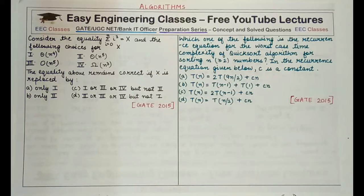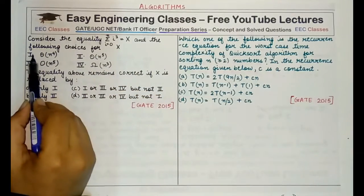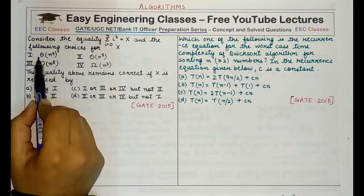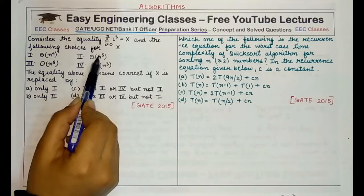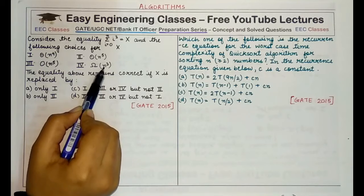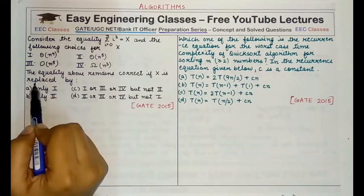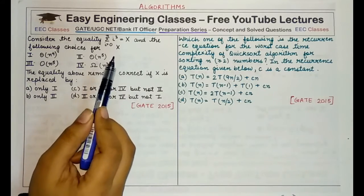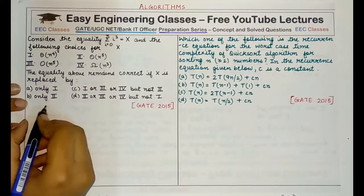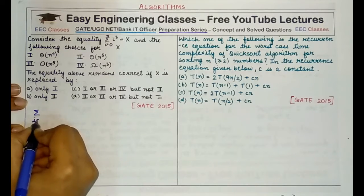Starting with the first question, consider the equality summation i cube i going from 0 to n equal to x and the following choices for x: theta of n raised to power 4, theta of n raised to power 5, big O of n raised to power 5, and omega of n cube. The equality above remains correct if x is replaced by. First you need to know what is exactly the summation of the cubes of n natural numbers or first n natural numbers.